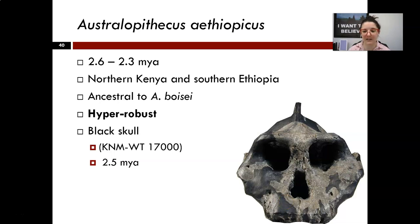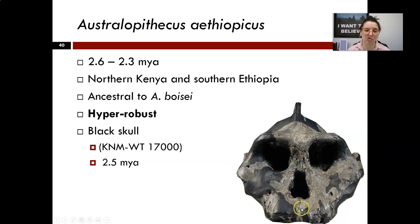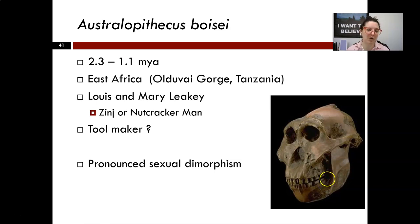Then we get into the robust Australopithecines. Characteristic of them are bony crests or ridges, which represent muscle attachment areas — really thick muscles attaching to the top of the skull, reflecting the massive teeth they have. Aethiopicus is probably the most hyper-robust, with really giant teeth producing a very dish-shaped face and massive prognathism to accommodate them. Boisei is another example — a reconstructed jaw showing just massive jaws and teeth, suggesting an adaptation to eating hard nuts and tubers, versus the more generalized diet of other Australopiths.